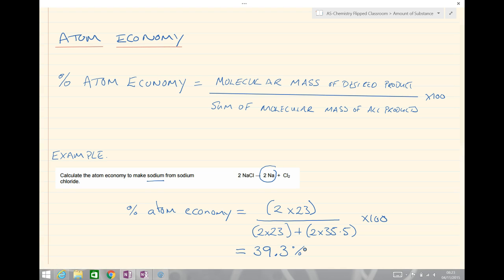Well, there's a couple of ways. The most important here is to say that, well, if I can find a use for the other product, that is the chlorine, perhaps I can sell that to another company, that becomes a desired product, and therefore my atom economy would increase.